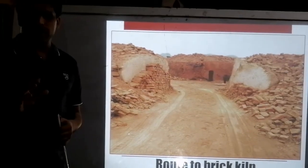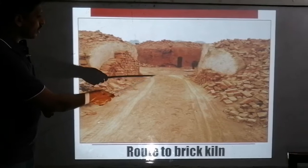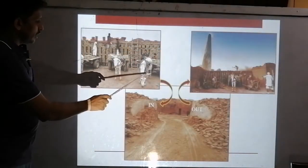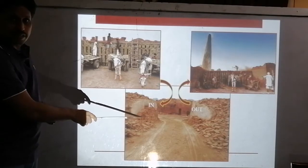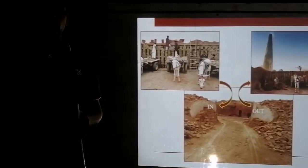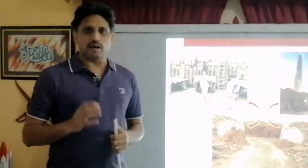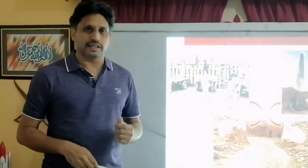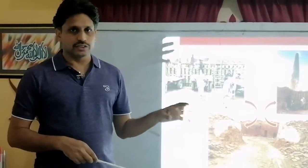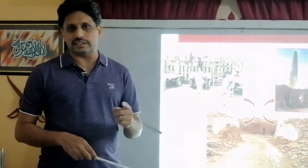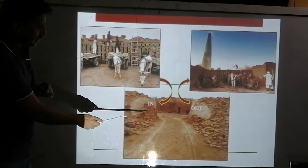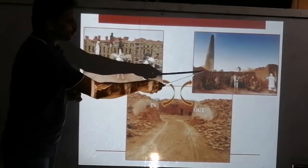Here is a route where you can see one route going left and another going right — bricks are added from one side and taken out from the other. On a daily basis, 15,000 to 18,000 bricks are baked. These bricks are taken out from the kiln, and the same number of raw bricks are placed inside for baking. This is a continuous process.